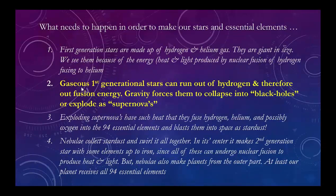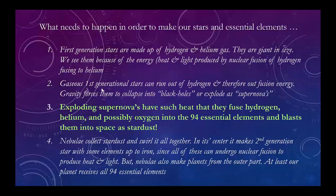The first-generation stars can run out of energy by losing their hydrogen, and therefore can't do the nuclear fusion necessary to stay bright and alive. So they start to collapse. Gravity forces them to collapse into either a black hole — a dense compacted core that sucks in all light — or they explode as supernovas. The exploding supernovas have such heat that they fuse hydrogen, helium, and possibly oxygen to make 94 essential elements and blast them into space as stardust.